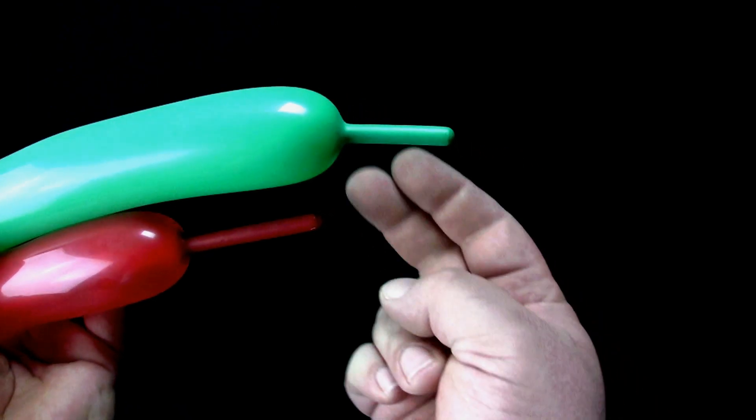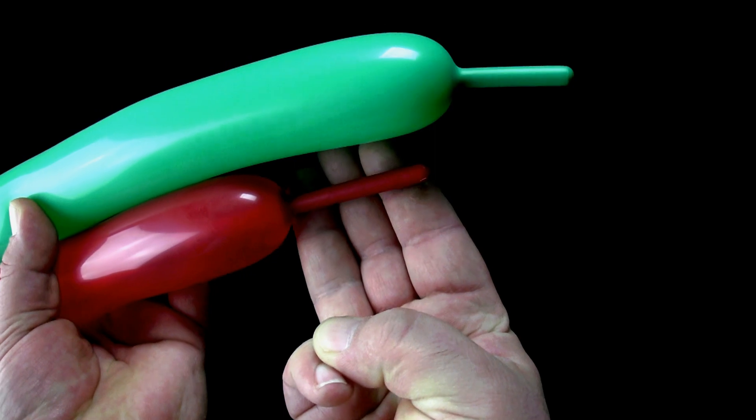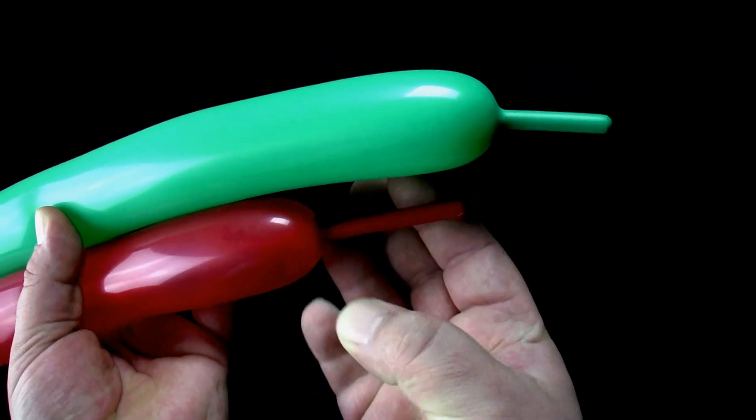The balloon for the stem you will want filled with about 2 fingers width left over at the end. The balloon for the petals you will want filled with about 3 fingers width left over at the end.